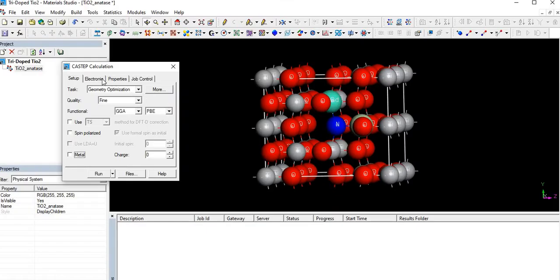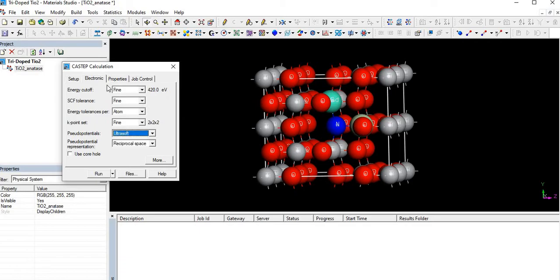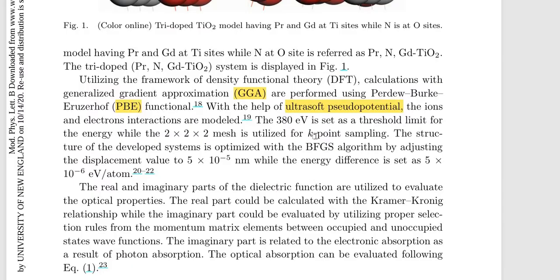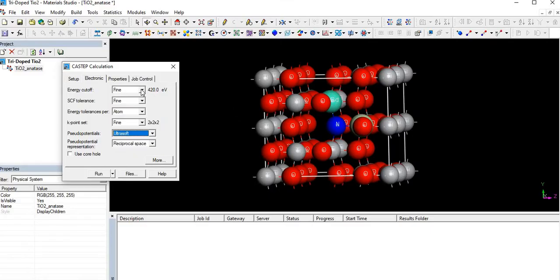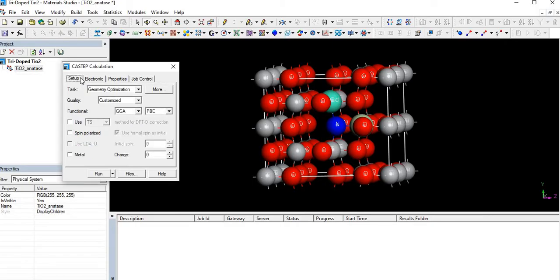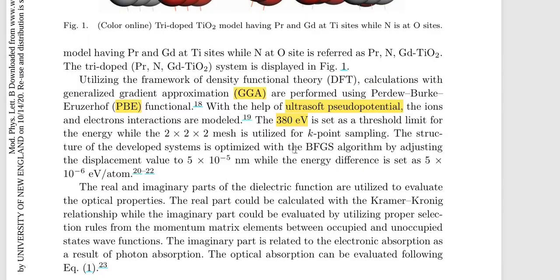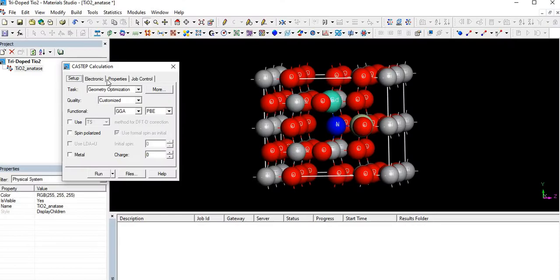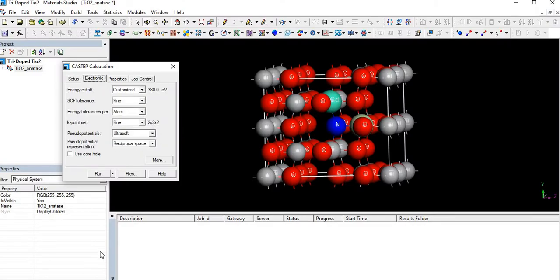The cutoff energy is 380 electron volts, so we have to set this to 380 electron volts. And with the 2×2 k-points, which are already selected.